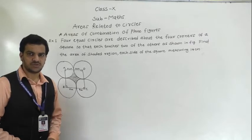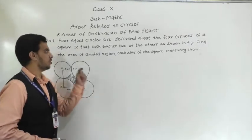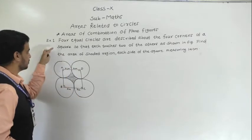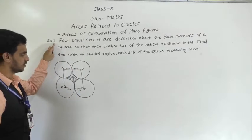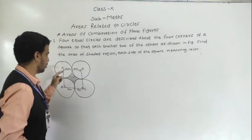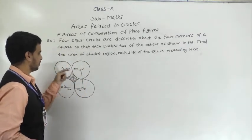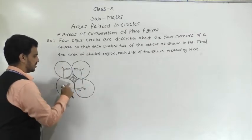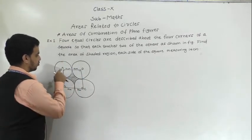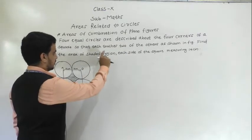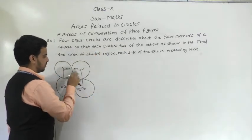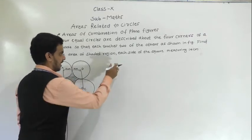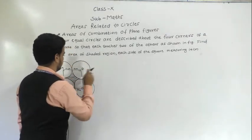Hello students, today we are going to solve more examples on areas of combination of plane figures. The first example is: four equal circles are described about the four corners of a square, so that each touches two of the others. Find the area of the shaded region, where the side of the square is given as 14 cm.